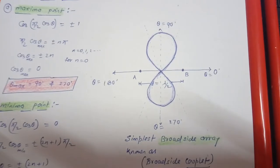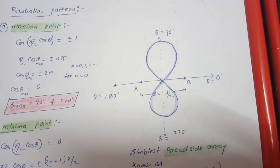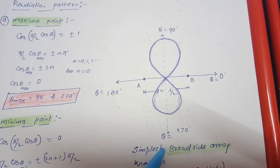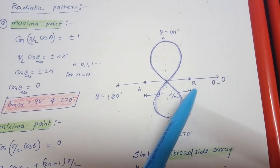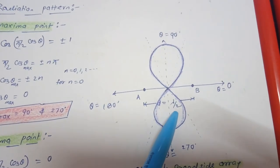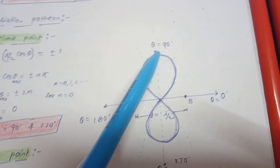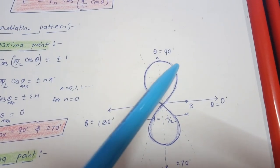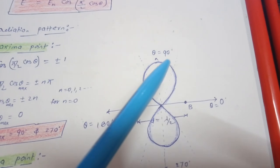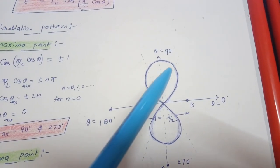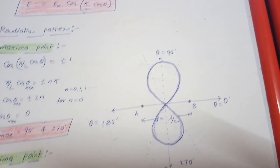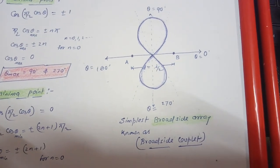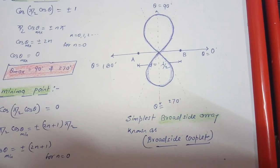Based on this calculation, if we draw the radiation pattern with θ = 0°, 90°, 180°, and 270° as reference, for the two point sources A and B separated by D = λ/2, the maximum radiation lobes appear at 90° and 270°. The 60° and 120° lines represent the half-power beam width. This antenna array is known as the broadside antenna array, and since we are considering two point sources, it is specifically known as the broadside doublet.